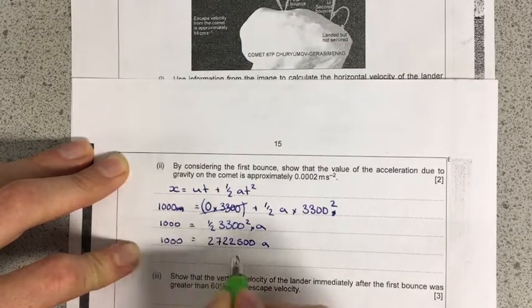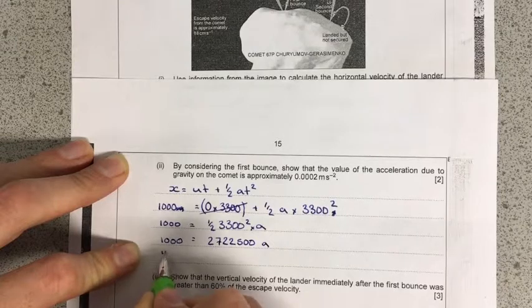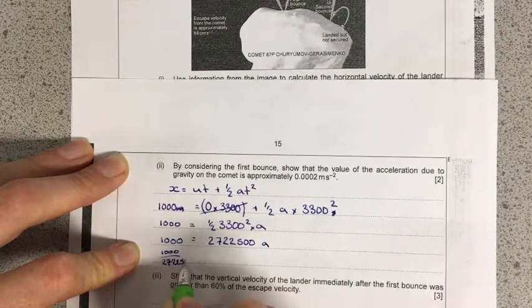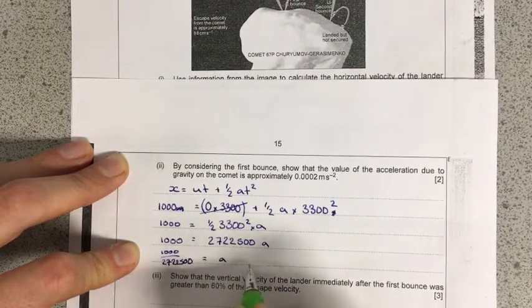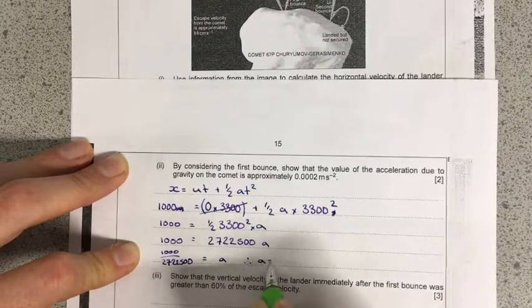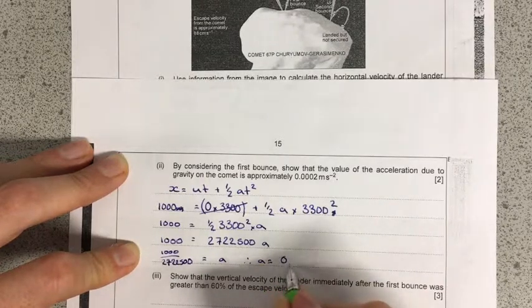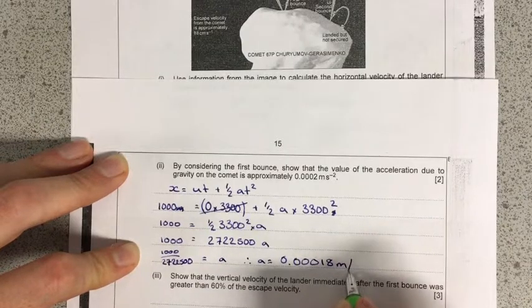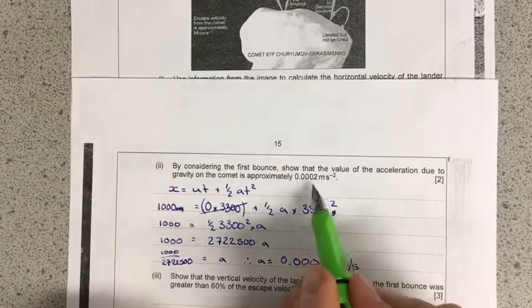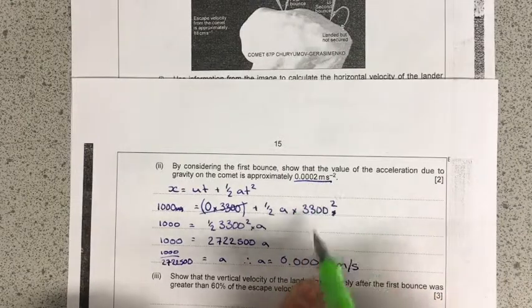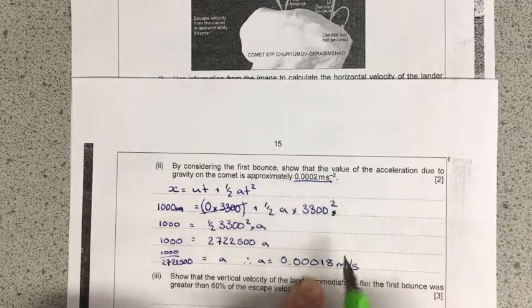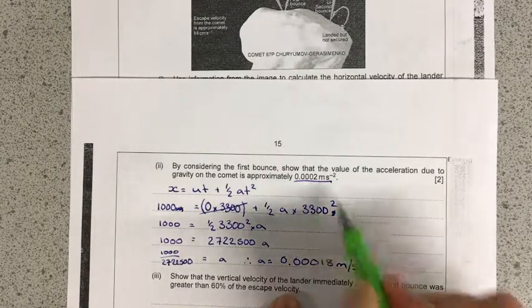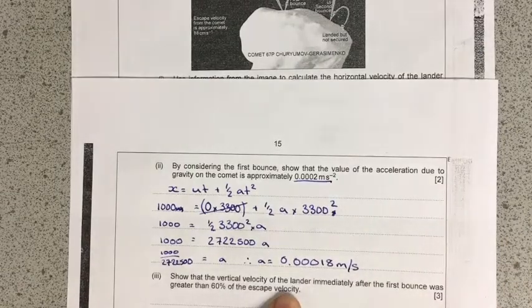I'm going to rearrange that, so I've got 1,000 over that large number. Therefore a is equal to 0.00018 metres per second squared. Now, the exam board wanted me to show that it's 0.0002 metres per second squared, so I've gone further than that. I've shown them that that number there would round to that. I've got an extra significant figure in my calculator.